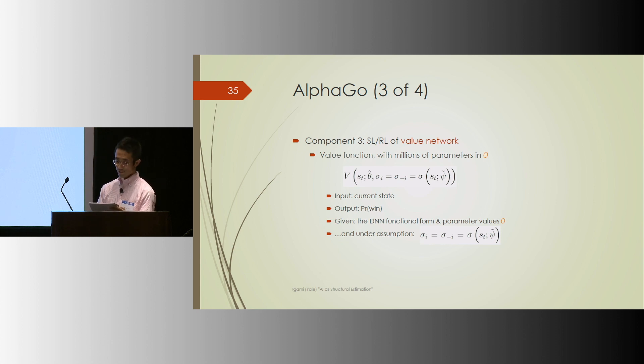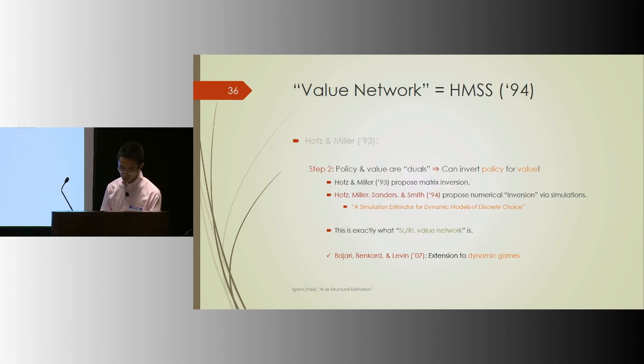So it's a value function that is a function of the current state, and that spits out the probability of winning given the parametric specification under the maintained assumption that my own strategy is the same as the opponent's strategy, which is the same as the estimated or trained strategy.